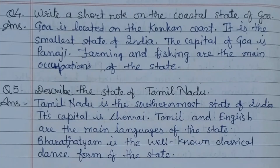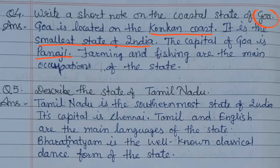Question number four: write a short note on the coastal state of Goa. Goa is located on the Konkan coast — it is a part of the western coastal plains. It is the smallest state of India. The capital of Goa is Panaji. Farming and fishing are the main occupations of the state. So in four sentences you write: first, its location; second, it is the smallest state; third, the capital is Panaji; and fourth, farming and fishing are the main occupations.